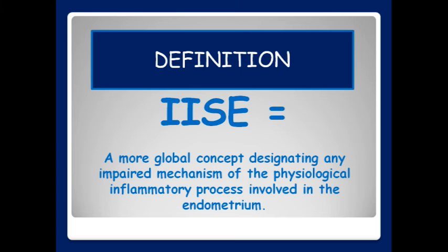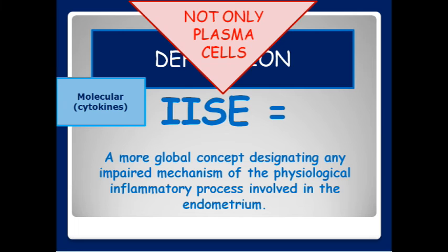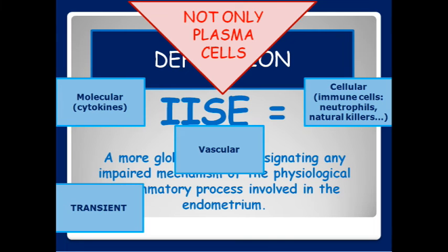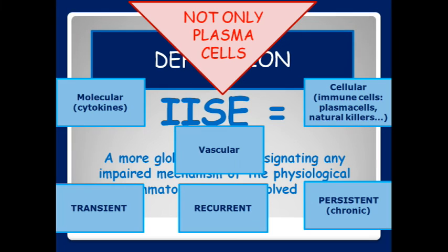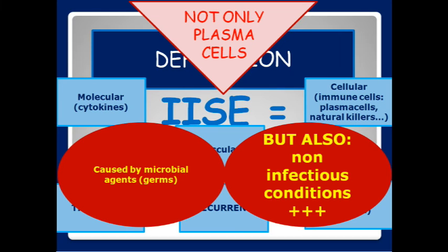IISE is a more global concept designating any impaired mechanism of the physiological inflammatory process already involved in the endometrium — not only plasma cells. It could be as well molecular mechanisms, cellular, or vascular. Whether it be transient, recurrent, or persistent. And most importantly, it could be triggered by germs, but also by non-infectious conditions.